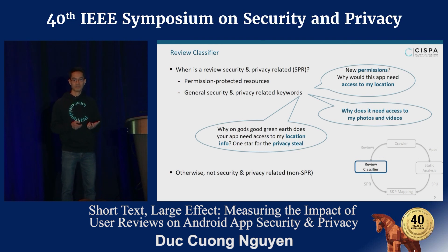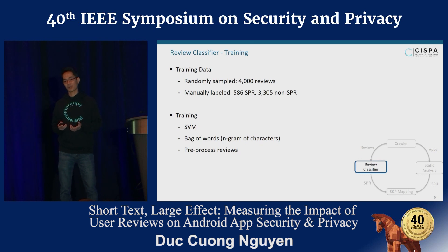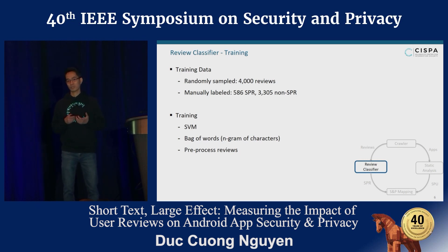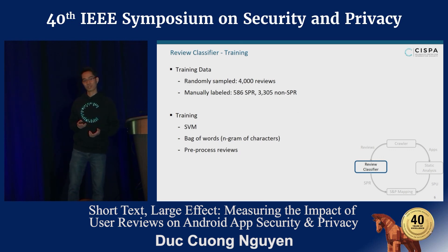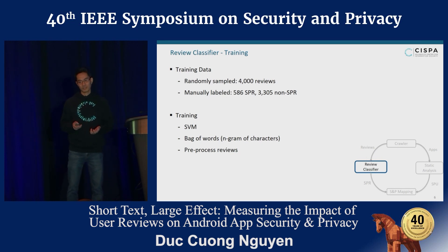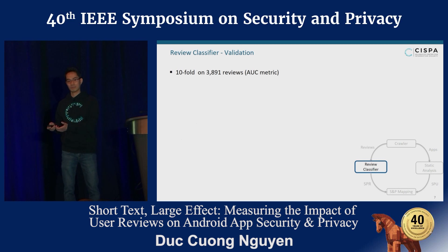Now we have the definition of what is a security and privacy-related review, or SPR. To build our review classifier, we randomly sampled 4,000 reviews and manually labeled them, resulting in around 600 SPR and around 3,300 non-SPR. Some reviews could not be labeled because they contained only one word or conveyed no information to the coders. To train our classifier, we use a support vector machine with bag-of-words features — specifically n-grams of characters — and apply preprocessing techniques such as stopword removal and stemming.